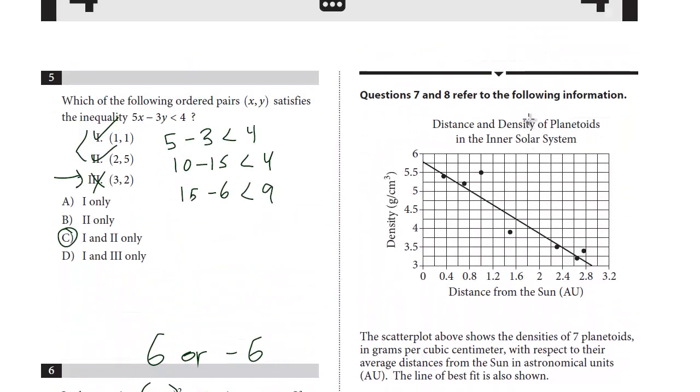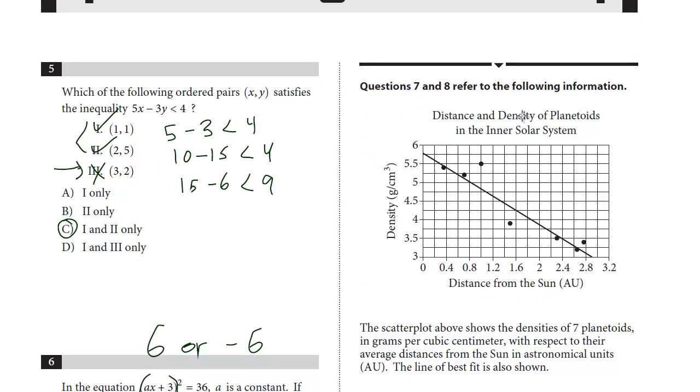Let's take a look at question 7. 7 and 8, this is part of a paired question, a two-part question. The scatter plot above shows the densities of seven planetoids in grams per cubic centimeters with respect to their average distances from the sun in astronomical units (AU). The line of best fit is also shown. So the scatter plot, each of these is a separate observation. But then this line of best fit, that's a line which best represents the data or a trend line. We see it has a negative slope. So there's a negative correlation. The farther the distance from the sun, the lower the density.